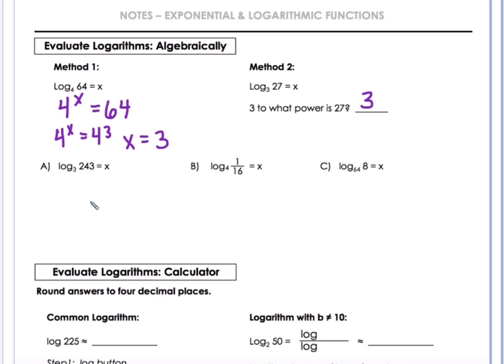So for letter A, you could do it either way, either method. In this case, I'm going to think 3 to what power will give me 243? And I know that's 3 to the fifth power is 243. Therefore, x must be equal to 5. Same with this one. I could rewrite it if I want. 4 to the x power equals 1/16. And I know that in order for this to be true, x would have to be negative 2.